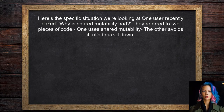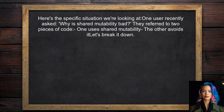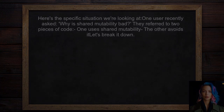Let's set the stage. One user recently asked: why is shared mutability bad? They were referring to a piece of code that doubles even values from a list. The first version uses shared mutability, while the second one avoids it. Let's break it down.